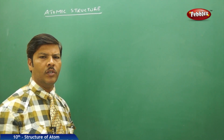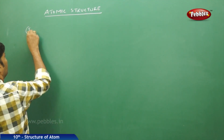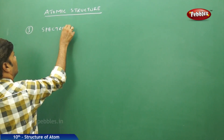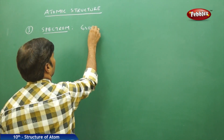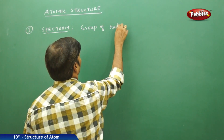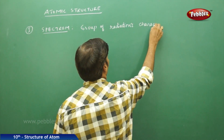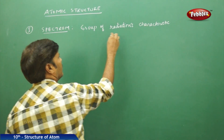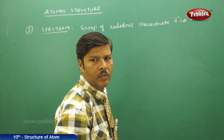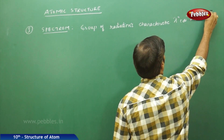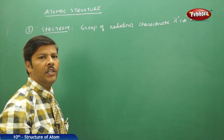Today let us start a new chapter: Atomic Structure. In this atomic structure, the first topic is Spectrum. A spectrum is nothing but a group of radiations with characteristic wavelength, frequency, or energy. Lambda (λ) is used for wavelength of radiation, mu (μ) is the frequency of radiation, and E is the energy of radiation.